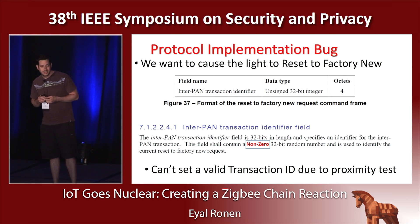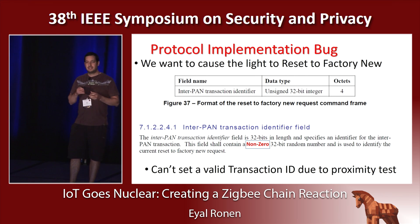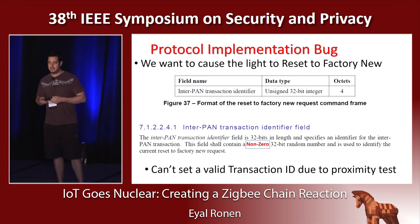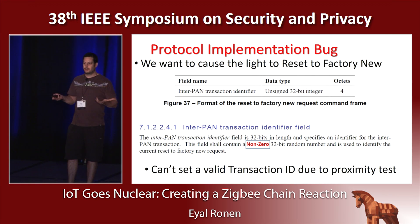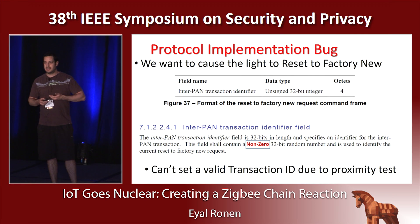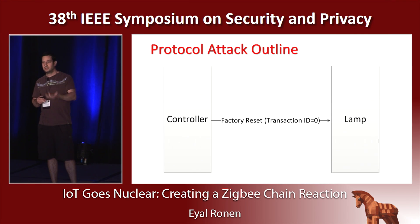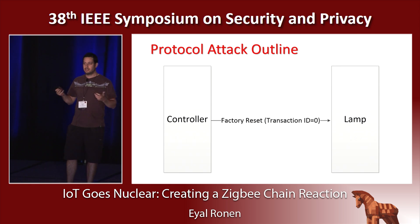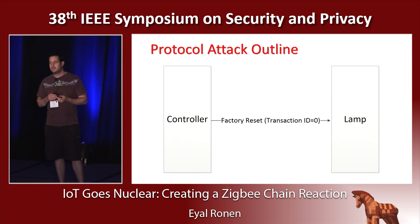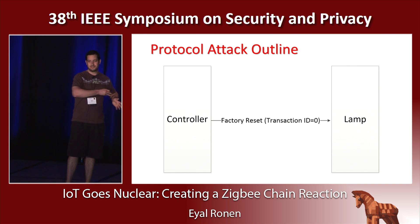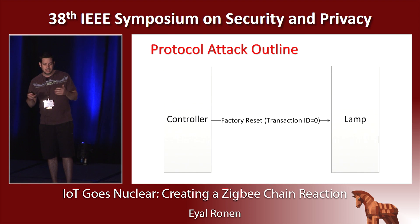We can't set a valid transaction ID because of the proximity test, since we are too far away. But looking at the small print of the specification, we saw that this number is supposed to be a non-zero random number. We asked ourselves: what if it is zero? The lamp has a struct that saves the transaction ID from the first message, and on the next message received, it checks if the new transaction ID matches the one stored in memory. The default value in this struct is, of course, zero. So our very sophisticated attack is simply to send one factory reset message with an ID of zero. The light restarts, deleting all of its keys.